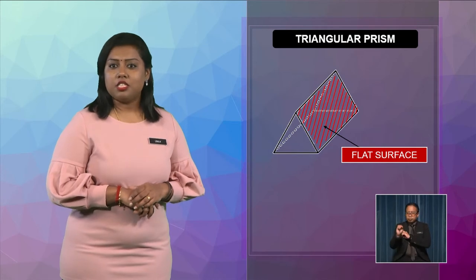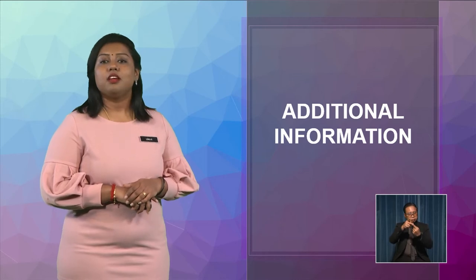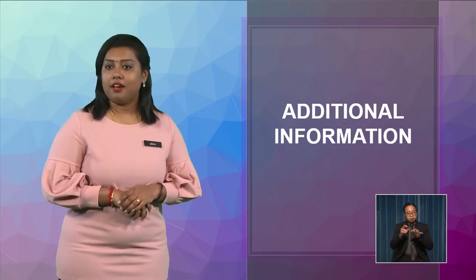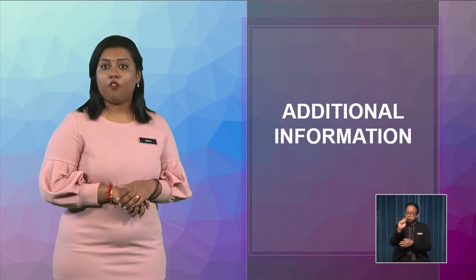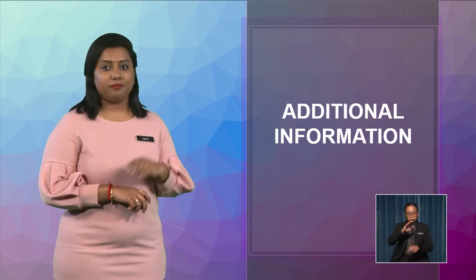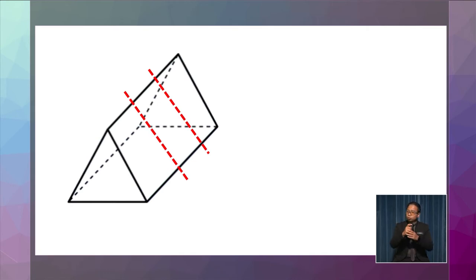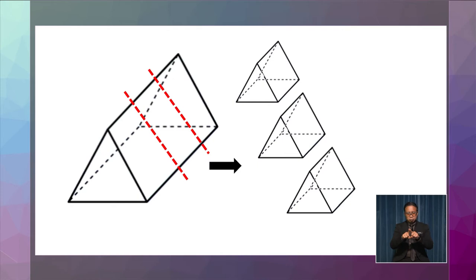Did you know that prisms have a special feature? If a prism is cut across, the shape of the cross section remains the same. Please look at the screen — it shows a triangular prism. When it is cut into three parts, the cross-sectional shape remains the same. The shape of the cross section remains the same even if it is cut across in several parts. Isn't that interesting?